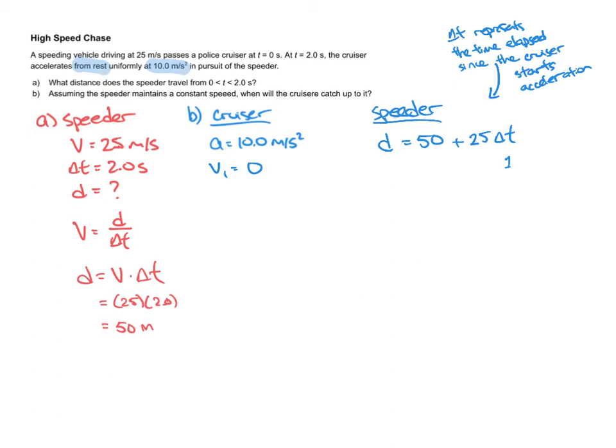So for example, if one second passes since the cruiser starts accelerating, then the speeder would be at a position of 50 plus 25 times 1, that equals 75 meters. And if two seconds passes since the cruiser starts accelerating, then the speeder would have now gone a total of 50 plus 25 times 2, which would be 100 meters. So this delta t I'm using in part B of the question represents the time elapsed since the cruiser started accelerating.